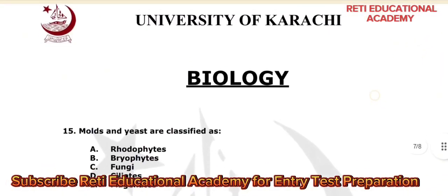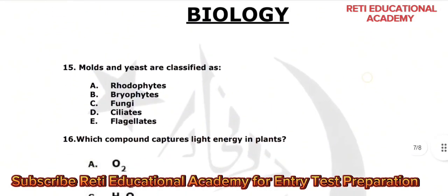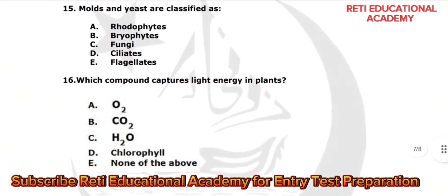Biology section, University of Karachi. Question 15: walls and yeast are classified as — a) Rhodophytes, b) Bryophytes, c) Fungi, d) Ciliates, e) Flagellates. The correct option is c) Fungi. Question number 16: which compound captures light energy in plants?